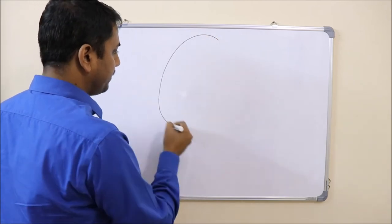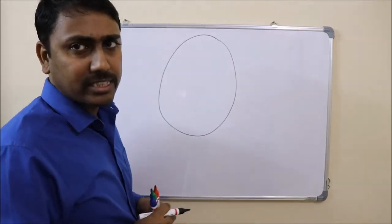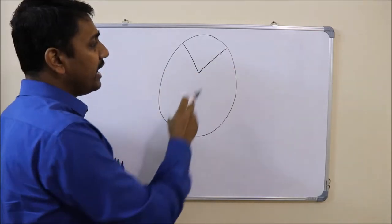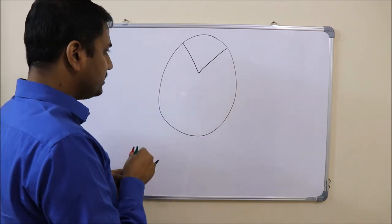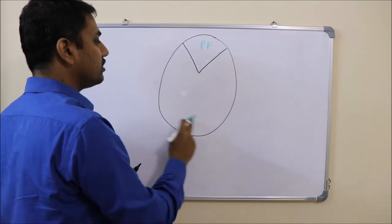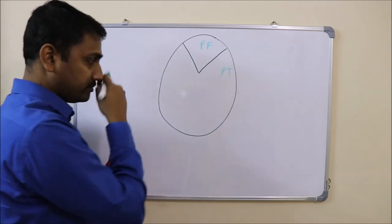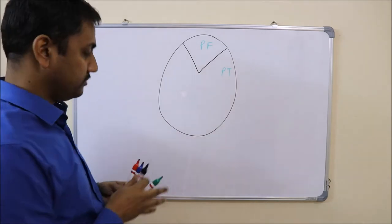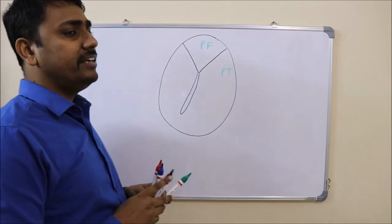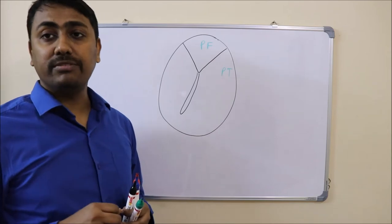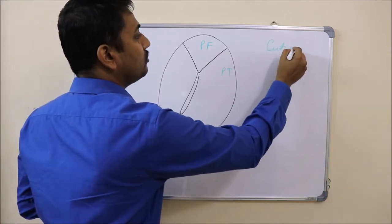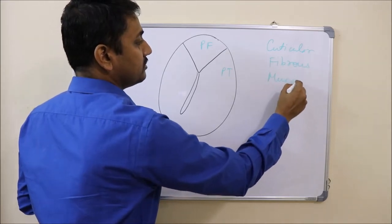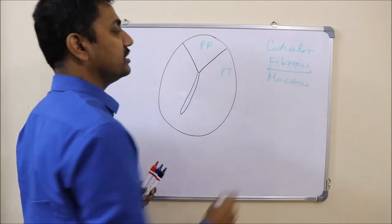This is the tympanic membrane of the right ear, seen from the lateral aspect. There are two folds: a posterior malleolar fold and an anterior malleolar fold. The part of the tympanic membrane between these two folds is known as pars flaccida, and the rest is known as pars tensa. From the junction of the malleolar folds, the handle of malleus extends, lying between the fibrous and the mucous layer. There are three layers: the outermost cuticular layer, the middle fibrous layer, and the innermost mucous layer.